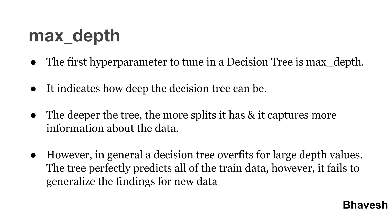The first parameter we'll consider is max_depth. Max_depth is, as the name suggests, the maximum depth that you allow the tree to grow to. The deeper you allow, the more complex your model will become. In the case of training error, if you increase the max_depth value, training error will always go down. But for testing error, if you set max_depth too high, the decision tree might simply overfit the training data without capturing the usual patterns, which will cause the testing error to increase.